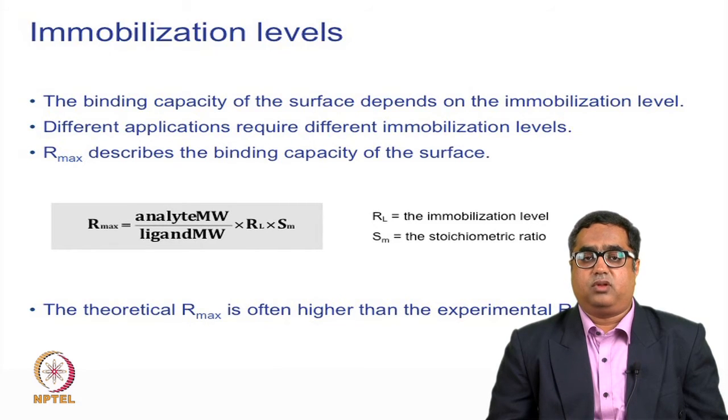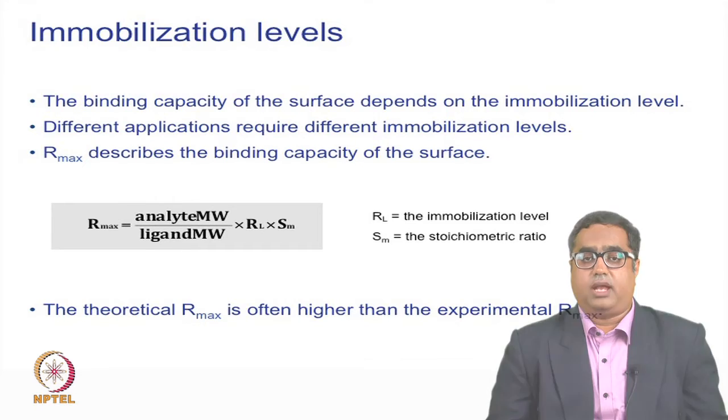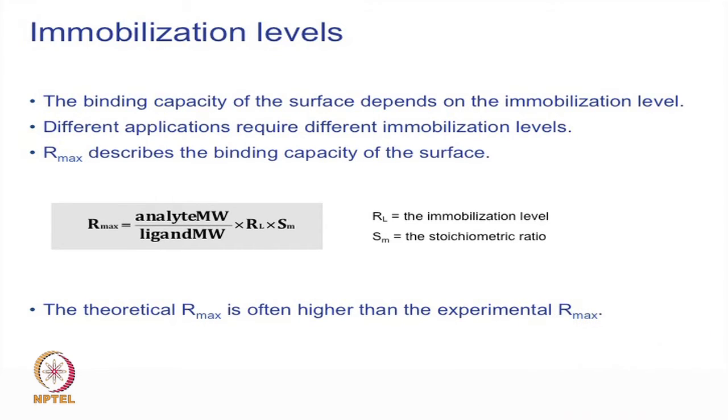Once the immobilization level is determined, we ask the machine to immobilize at that particular level. Alternatively, we can use time and flow mode, where the molecule is flowed at a particular pH for a set amount of time at a particular flow rate, and whatever immobilization occurs at the end becomes the immobilization level.